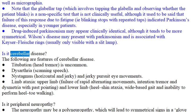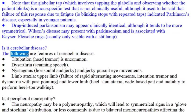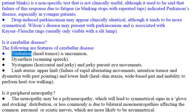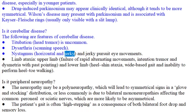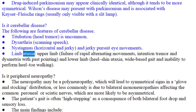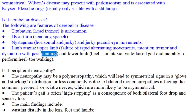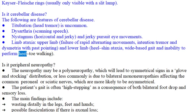Is it Cerebellar Disease? The following are features of cerebellar disease: Titubation (head tremor) is uncommon. Dysarthria with scanning speech. Nystagmus, horizontal and jerky, and jerky pursuit eye movements. Limb ataxia in the upper limb includes failure of rapid alternating movements, intention tremor and dysmetria with past-pointing; and in the lower limb, heel-shin ataxia, wide-based gait, and inability to perform heel-toe walking.